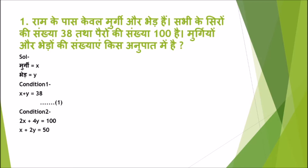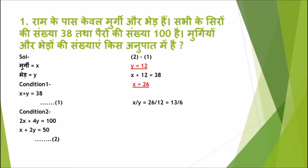2 common है, eliminate करने पर बनता है x + 2y = 50 — यह हमारी equation 2। अब equation 2 से equation 1 घटाएंगे, जिससे x eliminate होगा और y की value आएगी: y = 12। अब y की value equation 1 में डालने पर x + 12 = 38, यानि x = 26। तो मुर्गियों और भेड़ों का अनुपात होगा x:y = 26:12 = 13:6। यही हमारा answer है।